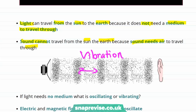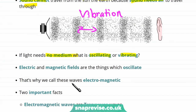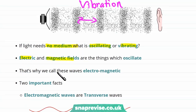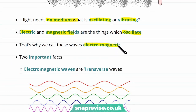Our definition of a wave involved vibrations — waves are vibrations or oscillations which transfer energy from one place to another. So if light doesn't need a medium, what is it that's oscillating or vibrating? It turns out that the things which are oscillating are quite abstract quantities called electric and magnetic fields. It's because the electric and magnetic fields are oscillating that we call these waves electromagnetic waves.